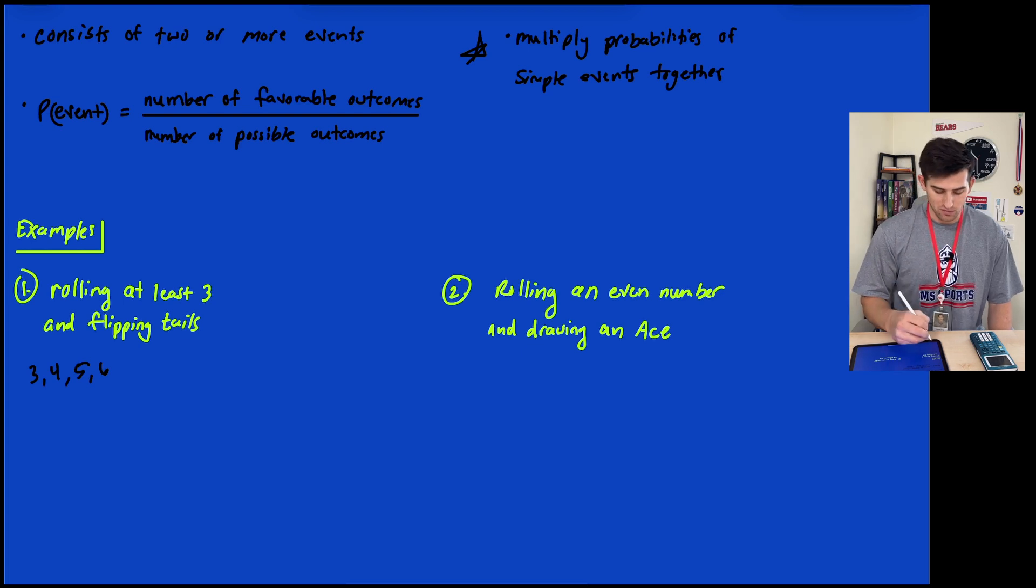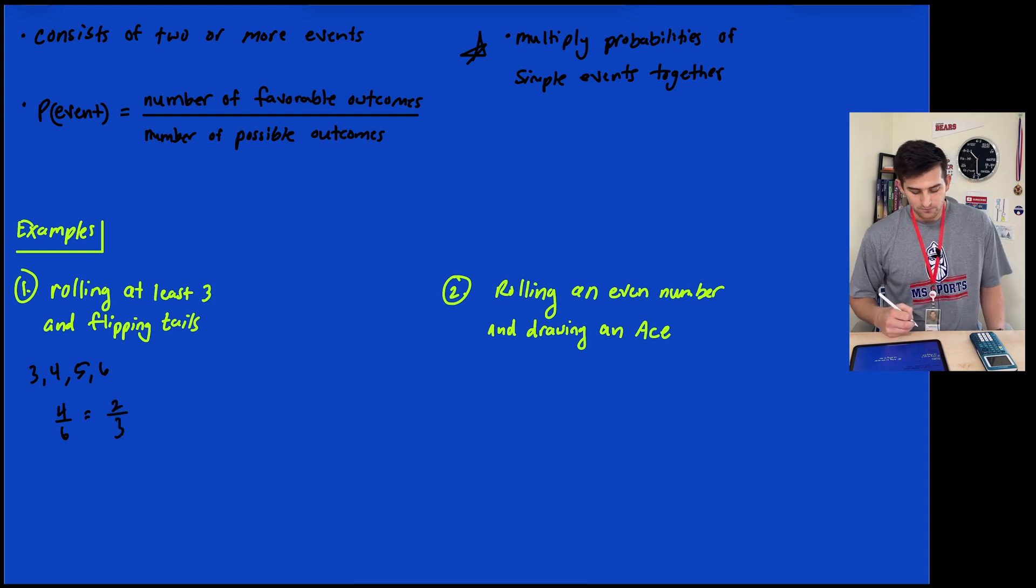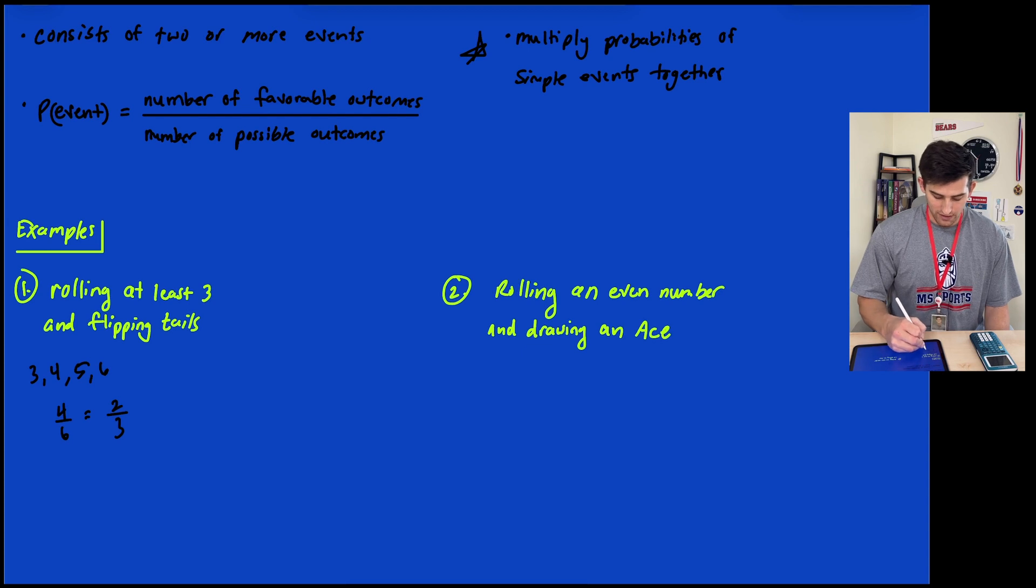4/6 simplifies to 2/3. Now flipping tails is just 1/2. We're going to take our probability of 2/3 and 1/2 and multiply them together.